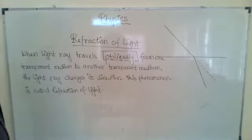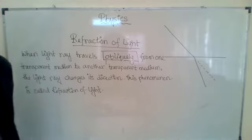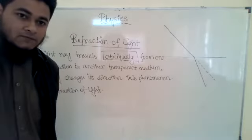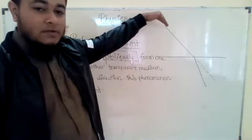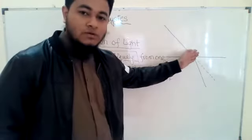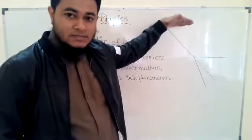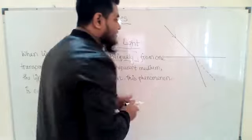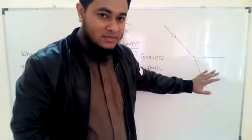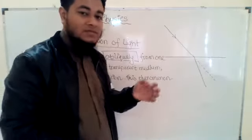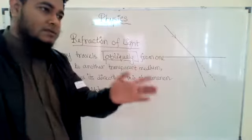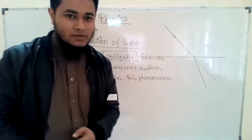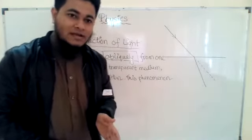Today we are going to start the chapter on refraction of light. You already have a little idea about the topic as the earlier chapter was also related to light. Whenever a light ray is traveling from one transparent medium to another, a certain portion of the light comes back to the previous medium — that phenomenon is known as reflection of light. A certain portion is reflected and a certain portion enters into the second medium.